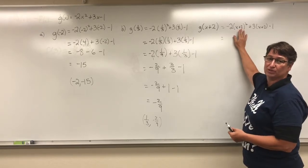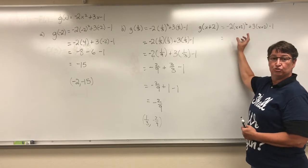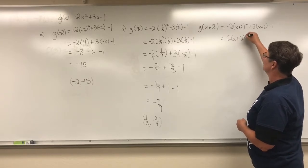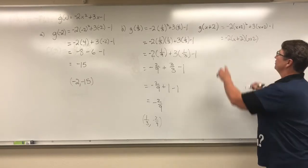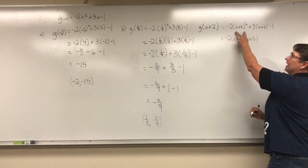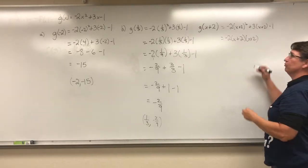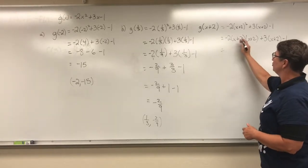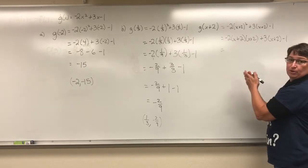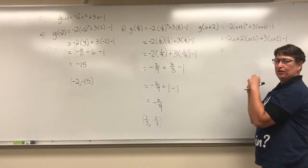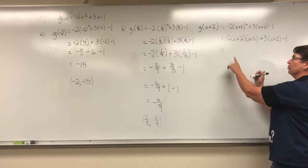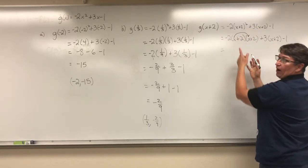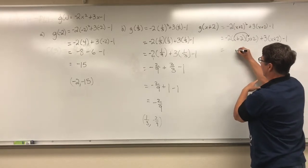So instead I'm going to do the exponent first. And just like before, I'm going to go ahead and write it out so that we can see what we're dealing with. We know that x plus 2 squared means that I'm just multiplying that by itself, so I'm going to write it out. Now when I do this multiplication, I'm going to use the distributive property — or some of you may remember the acronym FOIL. We're going to take this x times that x for our first times the first, so we end up with x squared.